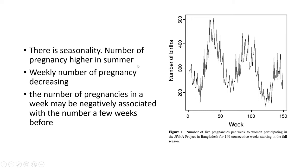For example, if we look at this figure showing the number of live pregnancies per week, weeks range from 0 to 150, meaning three years of data. You can see there is a trend of fewer live pregnancies over the three-year period, and within each year there is oscillation which indicates seasonality.